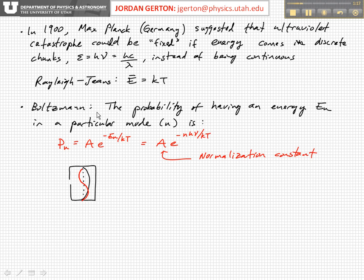So what Boltzmann had shown is that the probability of having an energy En in a particular mode, which we designate by the nth mode - it's just an index - is given by P sub n, that's the probability, is equal to A, where A is just some normalization constant, times e to the minus En divided by kT, where En is the energy of that mode.